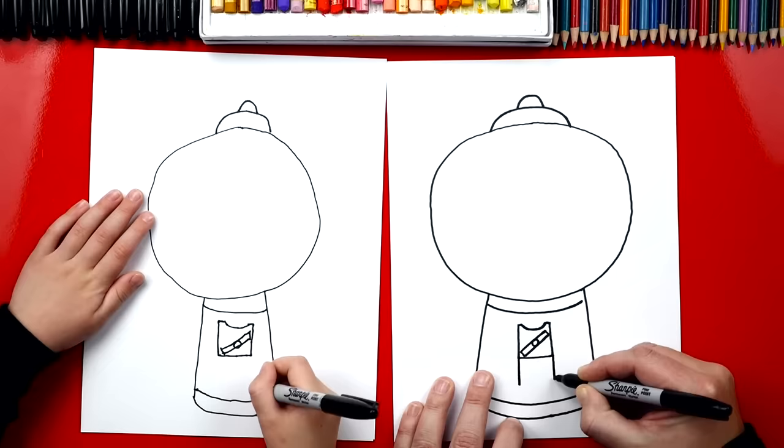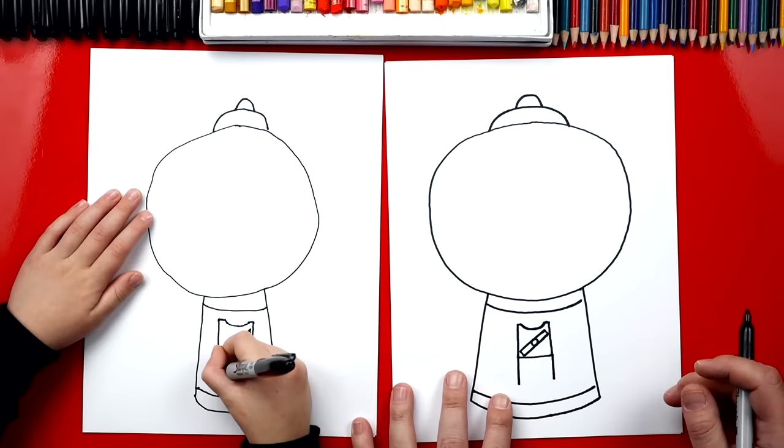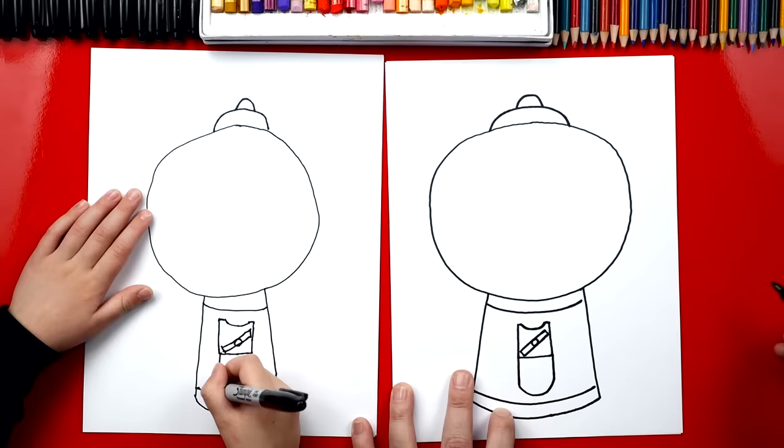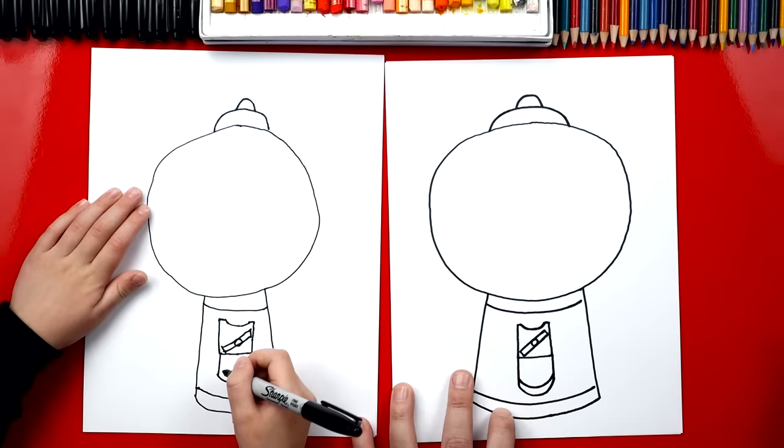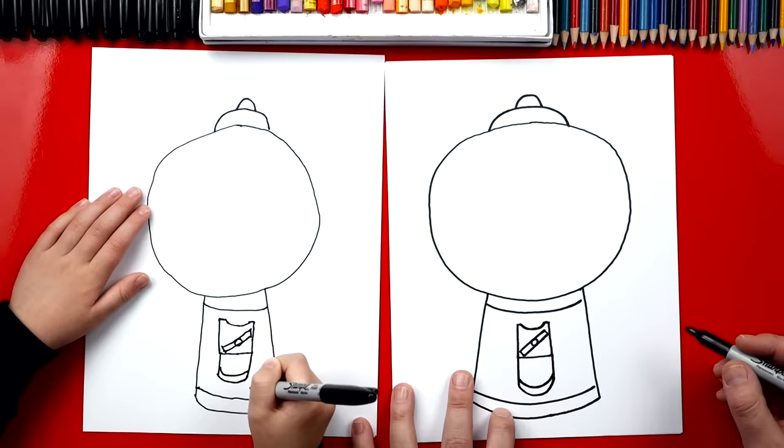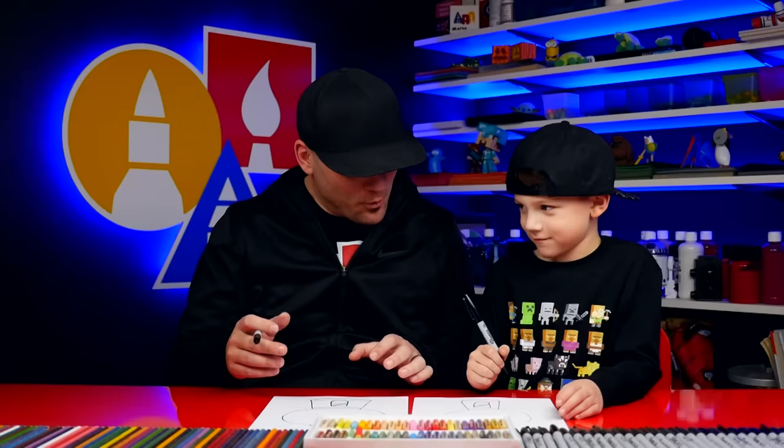Now let's draw the little opening at the bottom where the gumballs come out. So we're going to draw two lines that come down and we want to leave a little room at the bottom. And then at the bottom, we're going to connect with a curve, a U shape. And then right above it, we're going to draw one more U shape that comes around and back up. Good job. We did it.